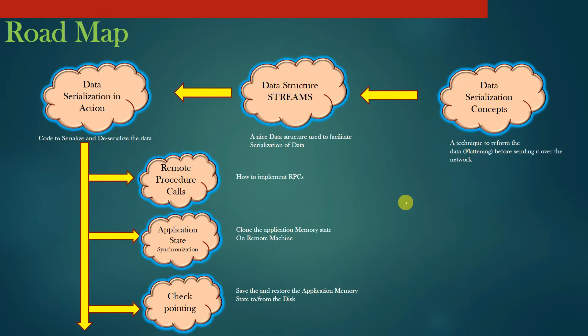Let us discuss the roadmap of this course. You can see that the course has been divided into six major parts. The first part involves the data serialization concepts, a technique to reform the data, the flattening of the data before sending it over the network.